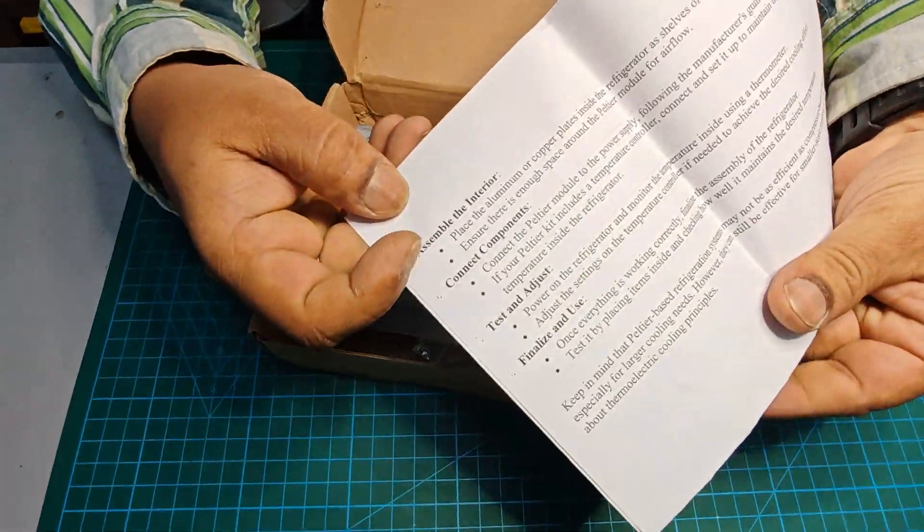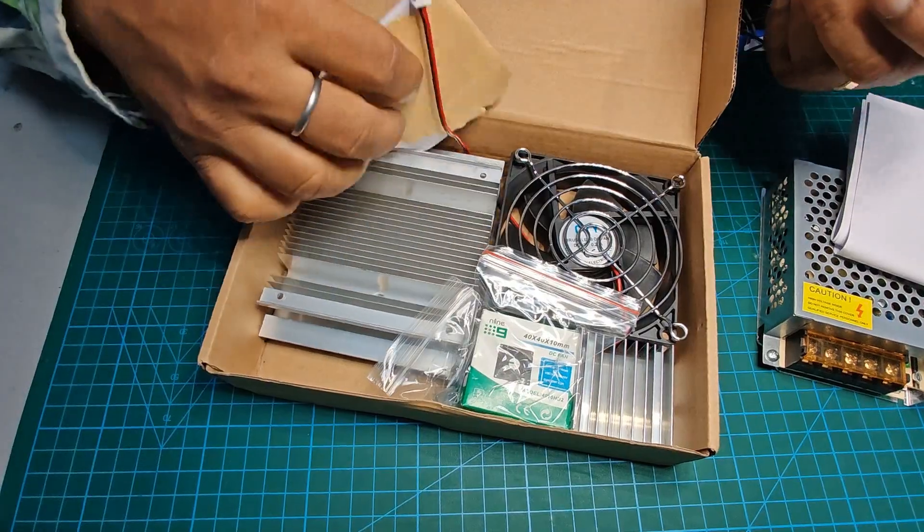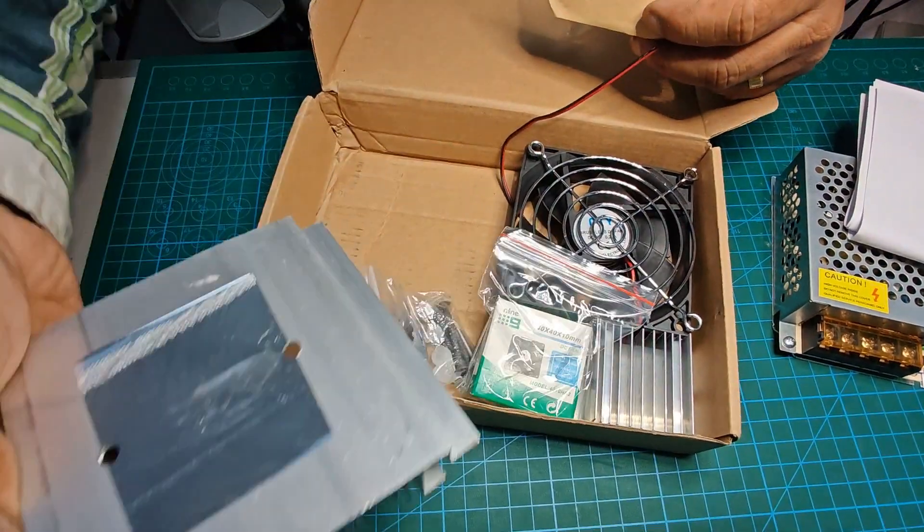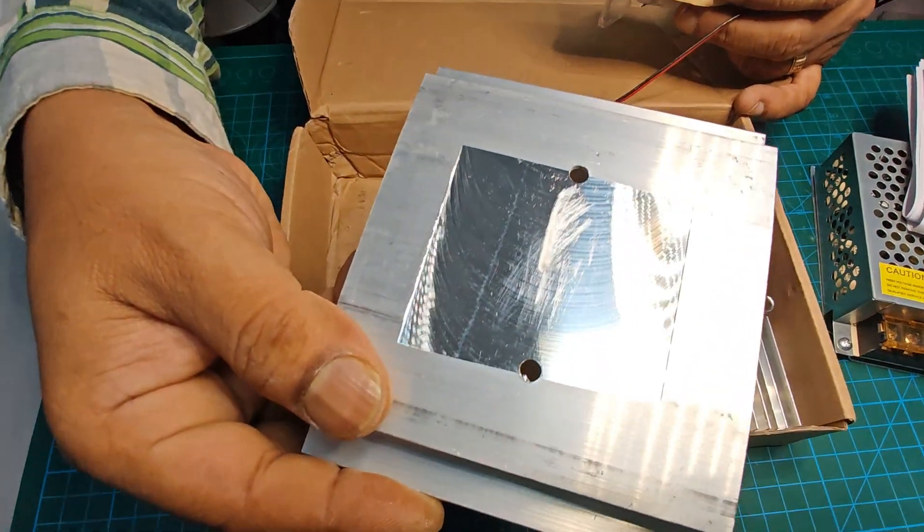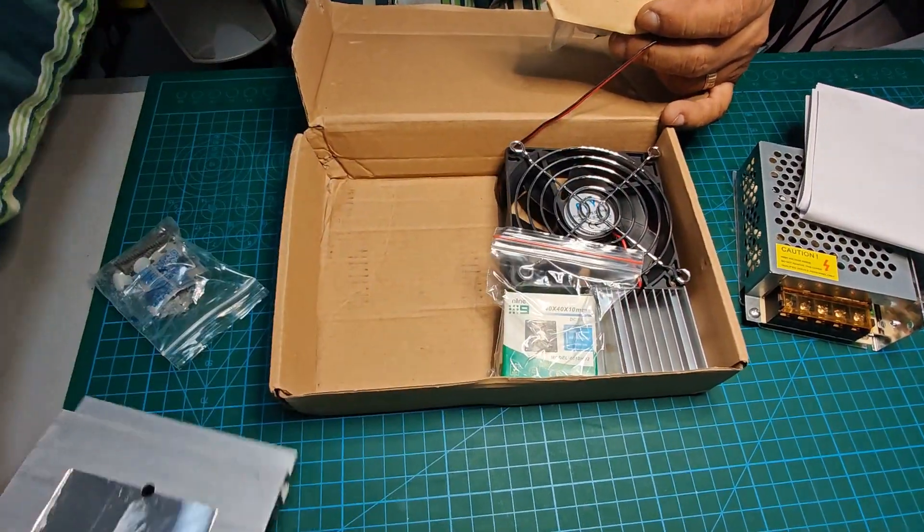This is the instruction set which I have got over here. The next is the most important heat sink, which absorbs the heat which is generated by the Peltier.